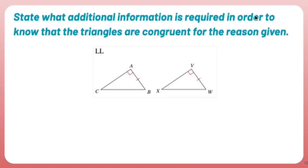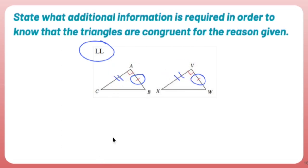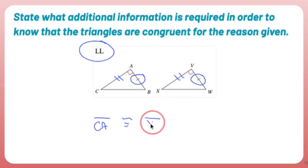State what additional information is required to prove the triangles congruent by LL. LL requires both legs to be congruent in two right triangles. I already have one leg marked. I need to show that the other pair of legs is congruent — not the hypotenuse. So I need to prove that side CA is congruent to side XV (C matches X and A matches V, keeping proper order). That gives me leg-leg and the triangles are congruent.